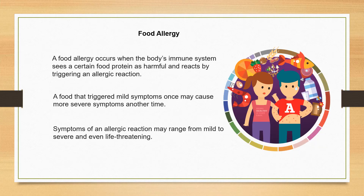A food allergy is very different than a food intolerance. A food intolerance involves the digestive system. A food allergy occurs when the body's immune system sees a certain food protein as harmful and triggers an allergic reaction. This allergic reaction could range from very mild to severe and may even be life-threatening. The allergic reaction can change — you may be able to eat a food once and have a very mild reaction, then eat it again and have a severe or even life-threatening reaction.